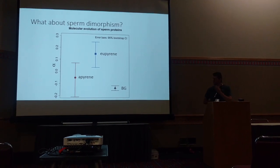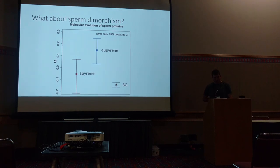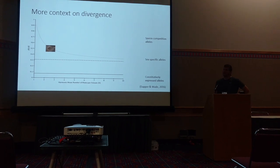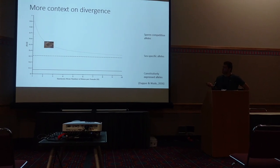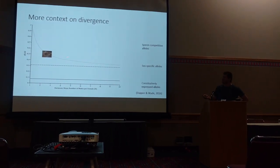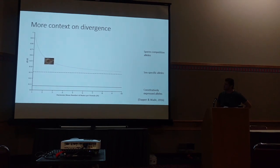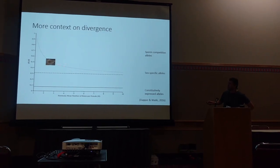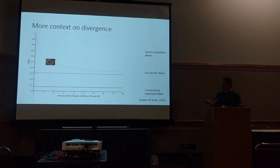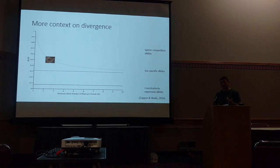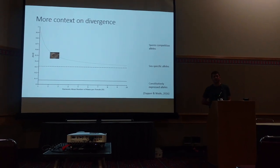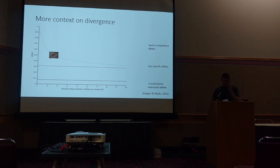If you've been paying attention, maybe you're thinking that something isn't quite lining up here. We made predictions earlier that we'd expect to see increased rates of divergence driven by drift rather than selection — but we saw kind of the exact opposite. Divergence wasn't that much higher, but what divergence we did see appeared to be the result of positive selection. So how do we reconcile these two?